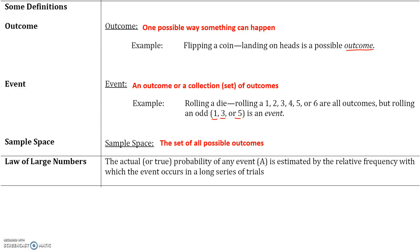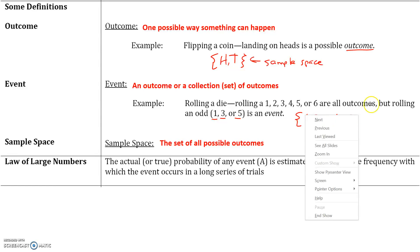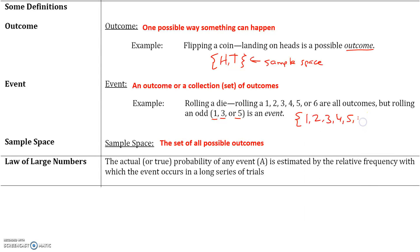For example, if you flip a coin, the sample space is heads or tails — those are the only possible outcomes. So the set of all possible outcomes for flipping a coin is heads and tails, and this is the sample space. If you roll a die, you could roll a 1, 2, 3, 4, 5, or 6, so the sample space for rolling a die is {1, 2, 3, 4, 5, 6}.